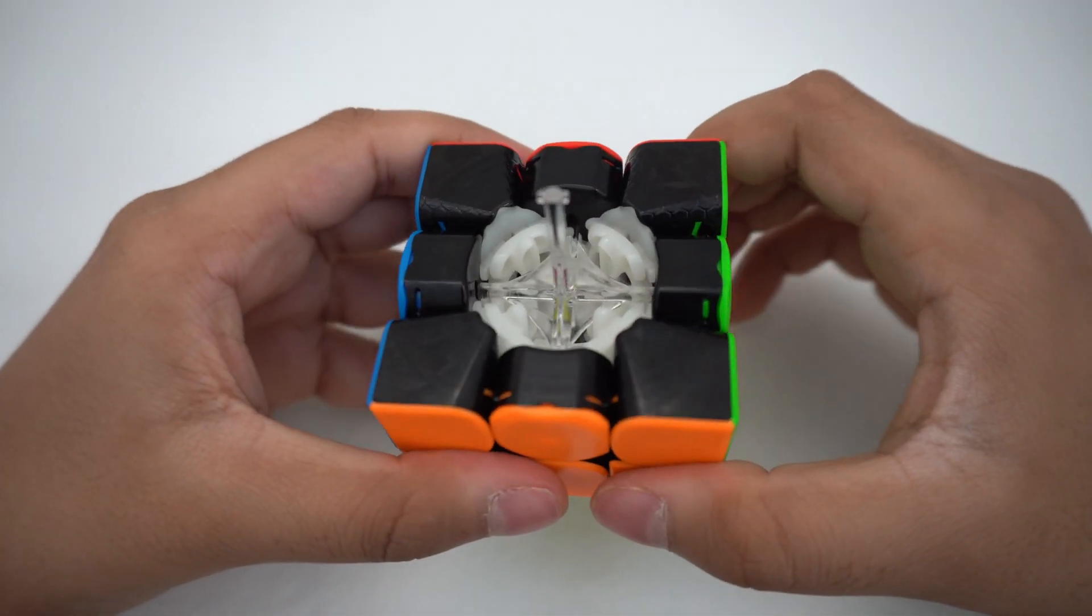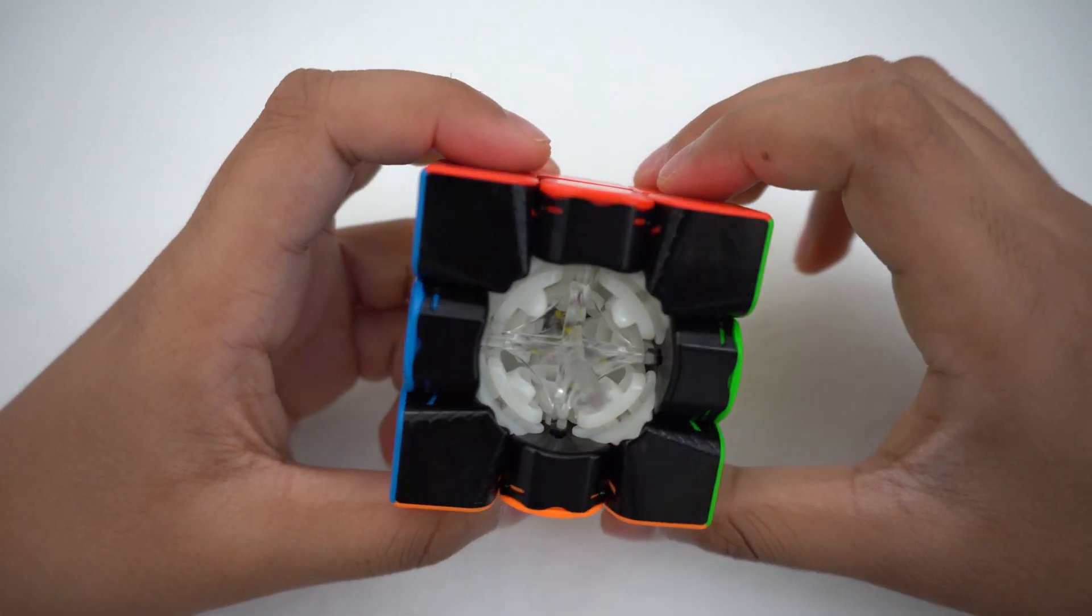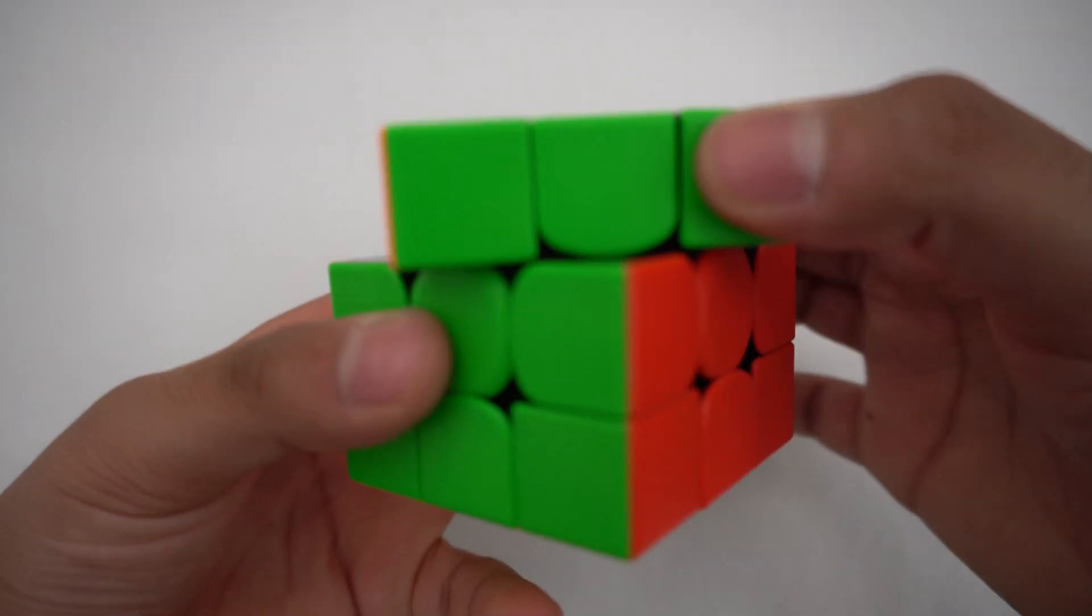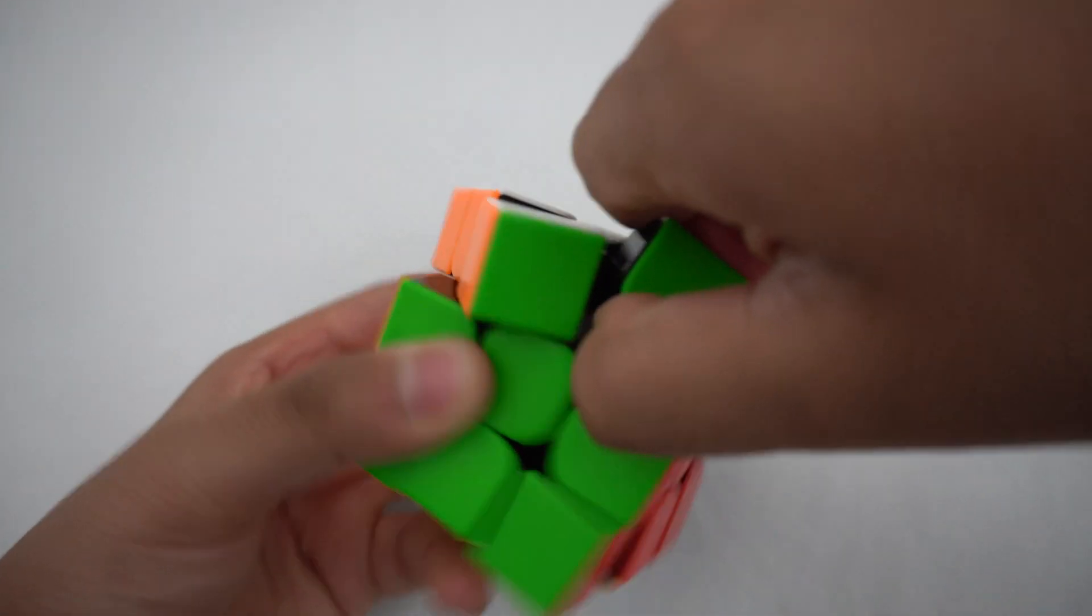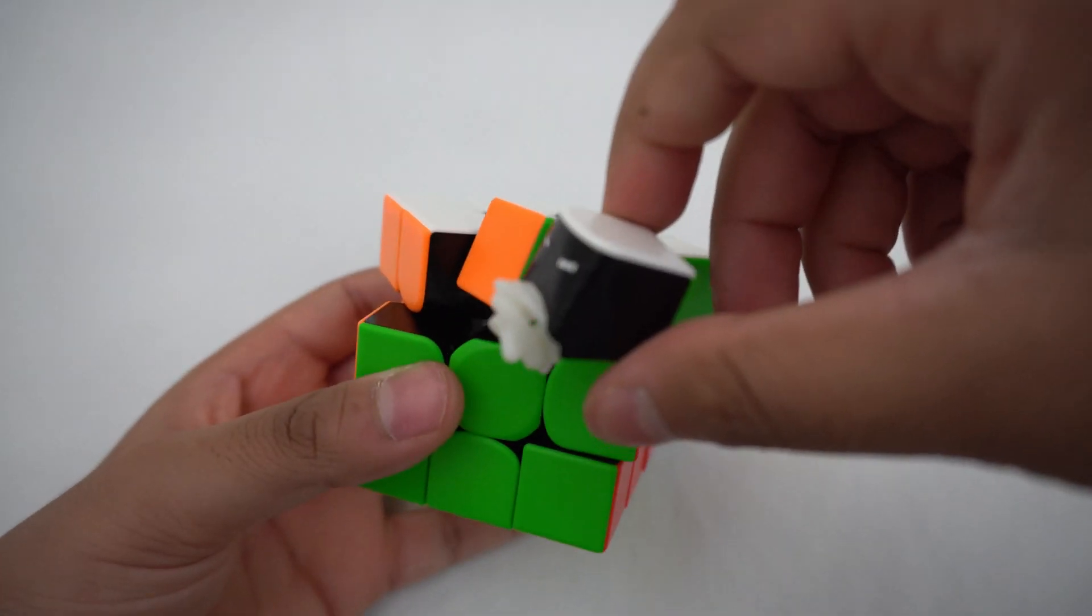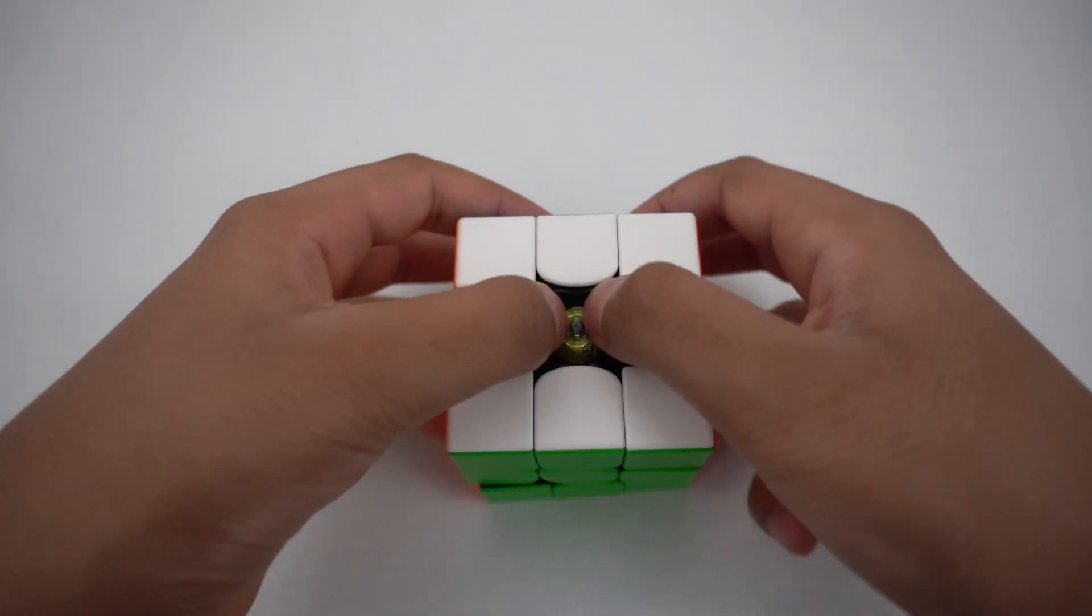Now let's look inside the cube. To do this, there are two ways. The first way is to turn the top layer 45 degrees and then use your thumb and pointer finger to wedge it out.